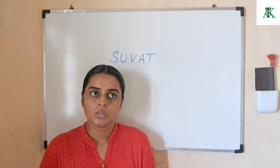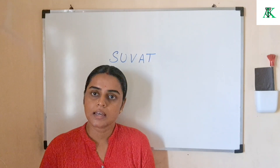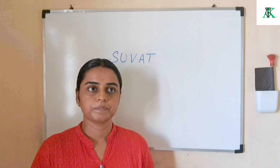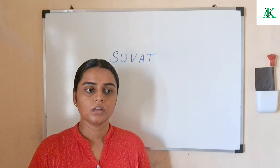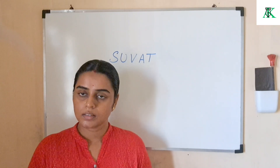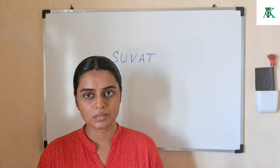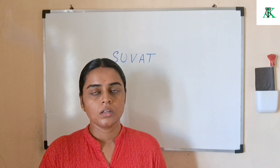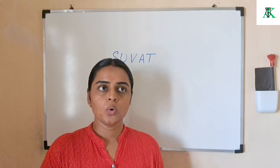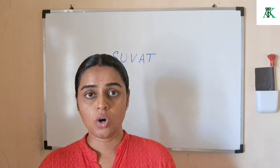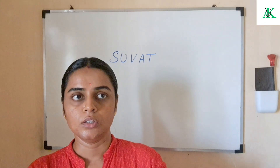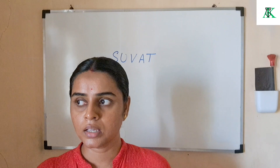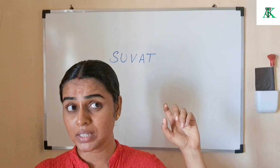Because Newton used vectors to explain the motion of an object, we also call this mechanics 'vectorial mechanics.' There is another name too — 'Newtonian mechanics' — because these laws were given by Newton.